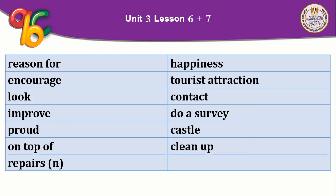'Improve' means to make better — to improve something, like your writing or quality of work. 'Proud' means فخور, and we use the preposition 'of': 'I'm proud of' my achievement. For example: 'I am proud of my parents,' 'I am proud of my father,' 'I am proud of my mother.' 'On top of' means above something. 'Repair' as a verb means to fix or to mend; as a noun it means the act of fixing.